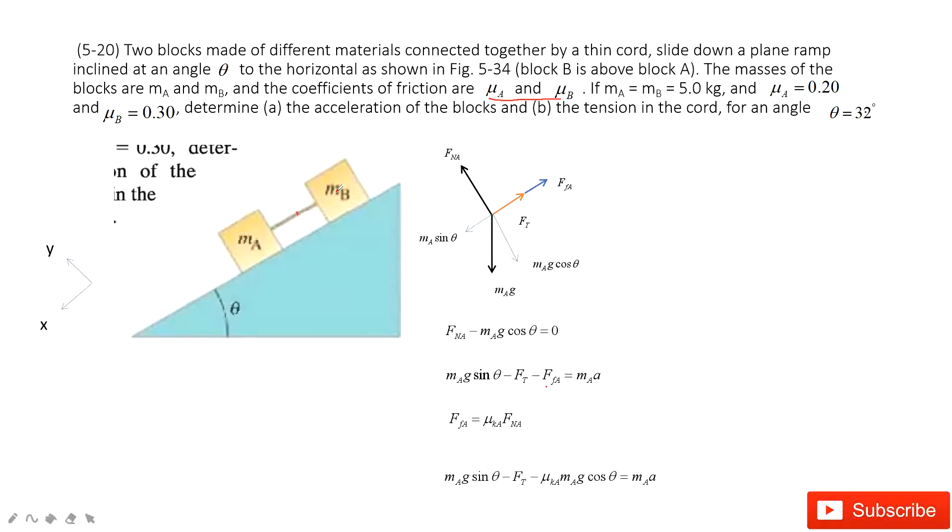Next, we look at object B. For B, we first consider the gravity and then the normal force, and also the tension. This tension is equal in magnitude but opposite in direction. Then we consider the friction, FB. We need to project the gravity at X component and Y component, so we have Mb cosine theta and Mb sine theta.